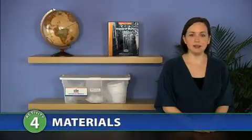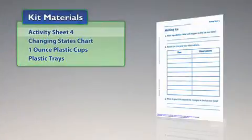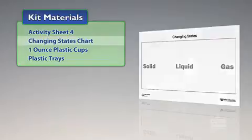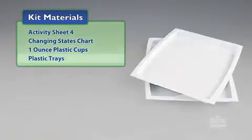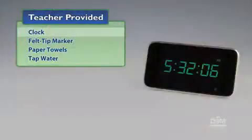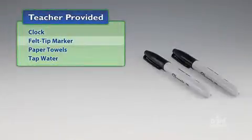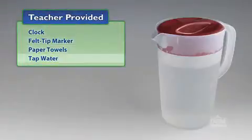From the kit, you will need Activity Sheet 4 Changing States Chart, Plastic 1-ounce Cups, and Plastic Trays. You will also need to provide Clock, Black Felt Tip Marker, Paper Towels, and Tap Water.